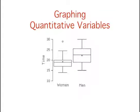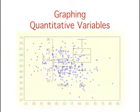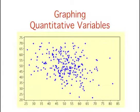Some types of graphs are good at summarizing differences between distributions. These two box plots compare the time to complete a task for men and women. Others, like this scatterplot, are used to show the relationship between variables.